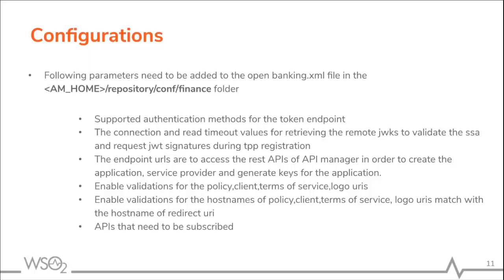The first parameter to add is the supported authentication methods for the token endpoint. Next, the connection and read timeout values should be added. Also, all the endpoint URLs to access the REST APIs of API Manager — to create applications, service providers, subscribe to APIs, and generate keys — should be added. The user can also enable validations for Policy Client and Terms of Service URIs in the Open Banking XML, and validation can be added for the hostname of Policy Client logo URIs to match with the hostname of the redirect URI.